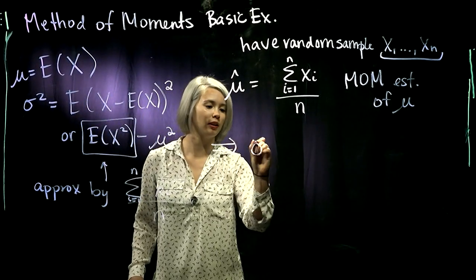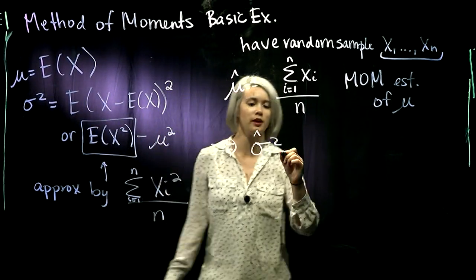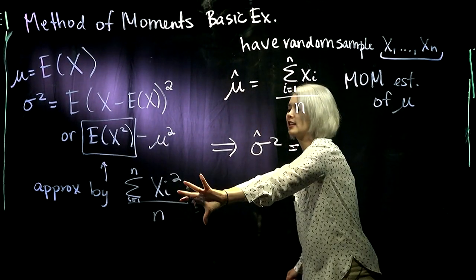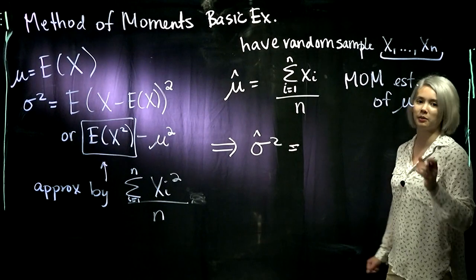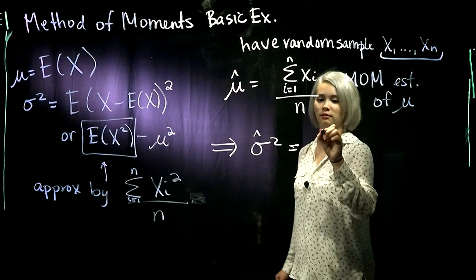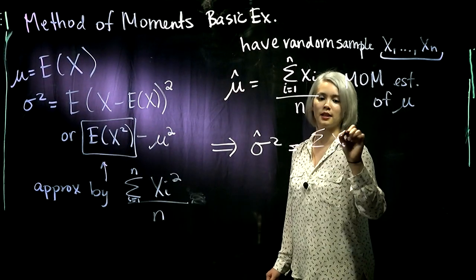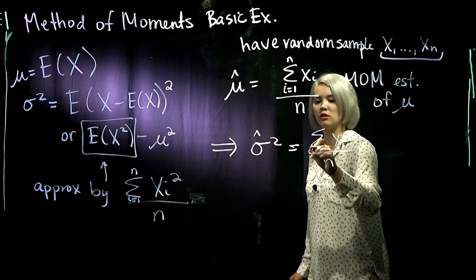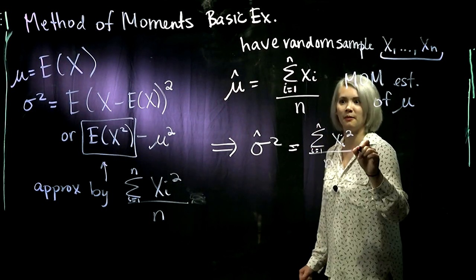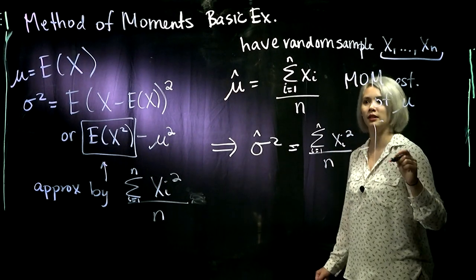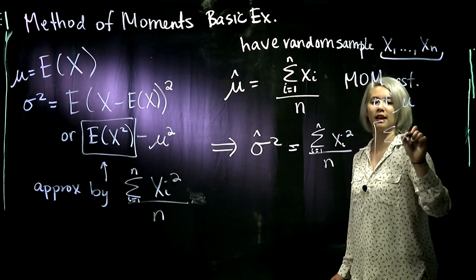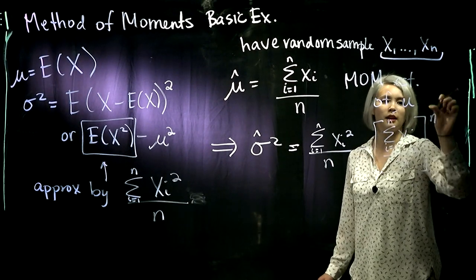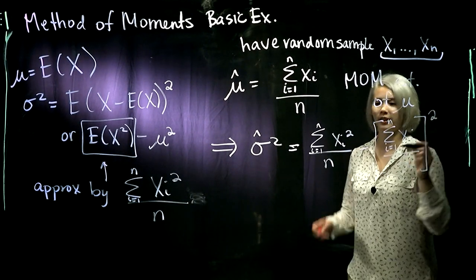Therefore, we can get our estimate of σ² using method of moments. We just take this estimator minus that estimator. So we have sum of the xᵢ² over n minus the sum of xᵢ over n and square that whole thing.